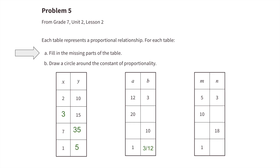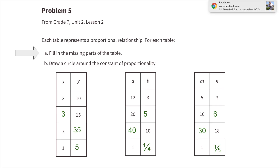12 divided by 12 equals 1, and 3b divided by 12 equals one-fourth. So 40a equals 10b. Since 20 is half of 40 and 5 is half of 10, 20a equals 5b. On the right-hand table, 5m equals 3n. Since 10 is twice 5, twice 3 is 6, so 5 times 6 is 30 and 3 times 6 is 18. Five divided by 5 is 1 and 3 divided by 5 is three-fifths.